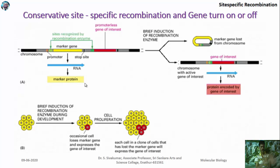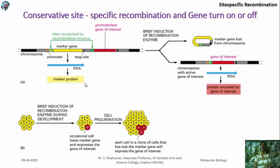Both site-specific recombination and general recombination processes are used to introduce or create new characteristics — new varieties are created, additional characteristics are gained, and lost characteristics can be regained. The site-specific recombination occurs in two ways: transpositional site-specific recombination and conservative site-specific recombination.